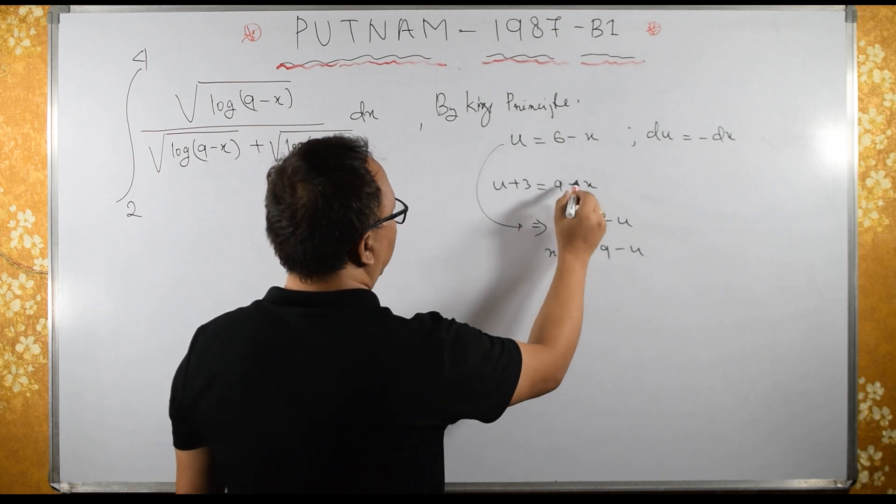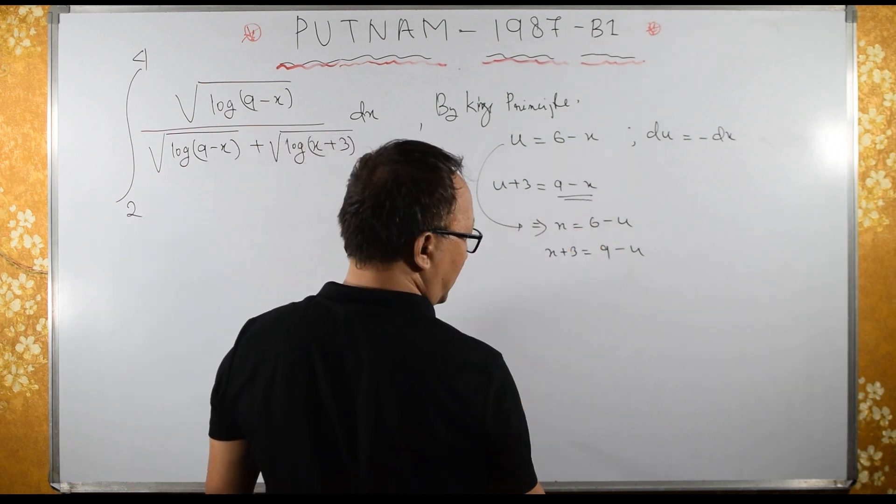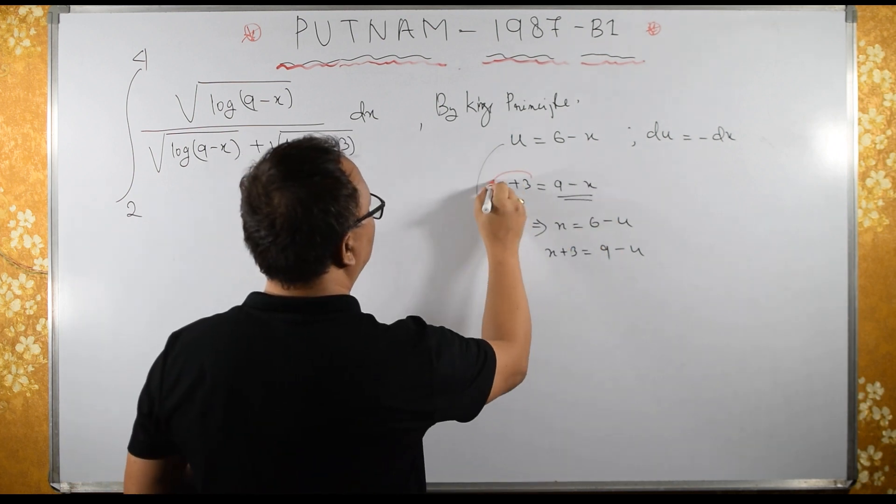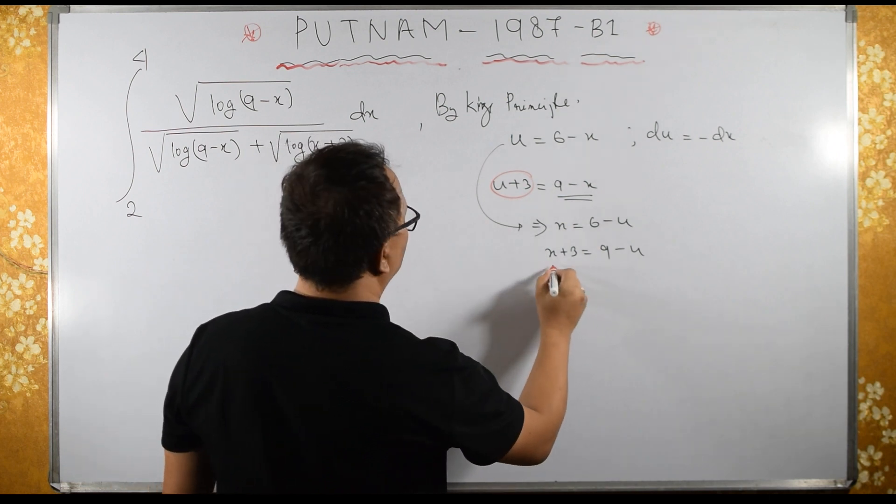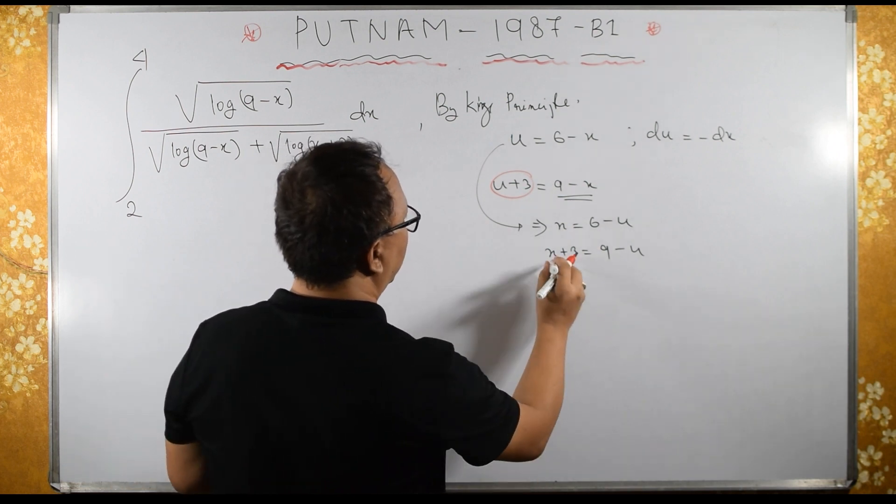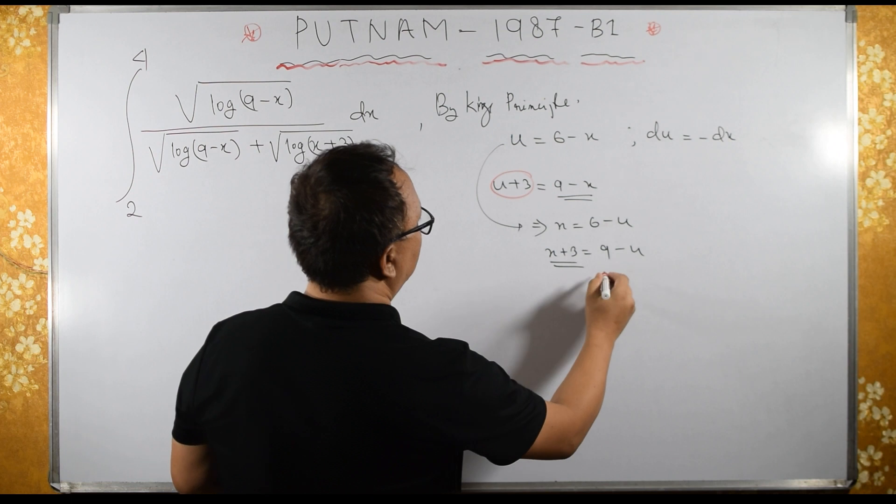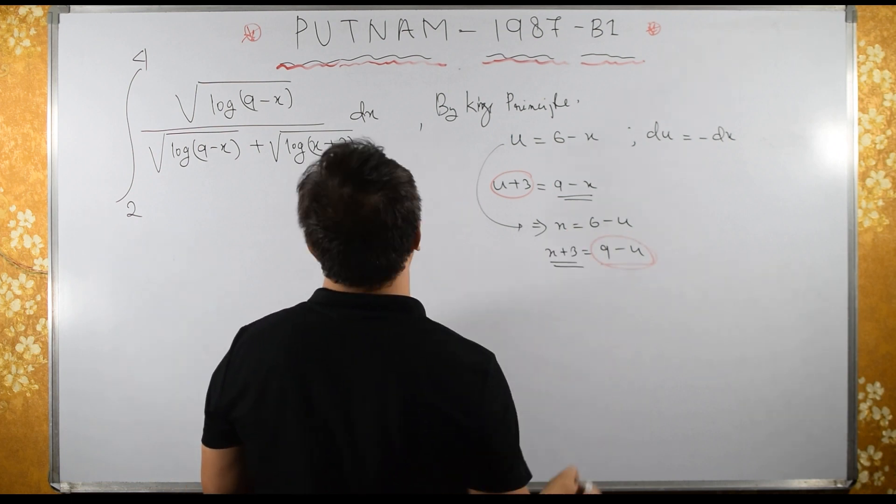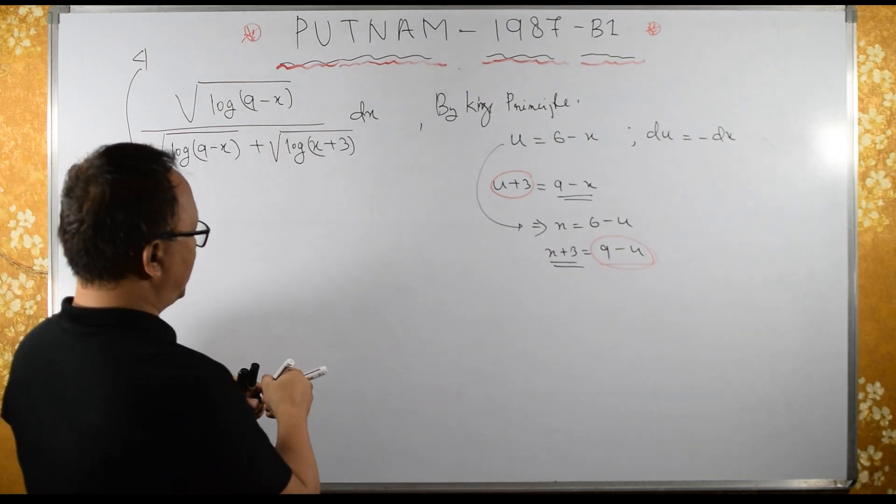So instead of 9 minus x, I need to write u plus 3, and then for x plus 3, I need to write 9 minus u. How about limits? Let us see.